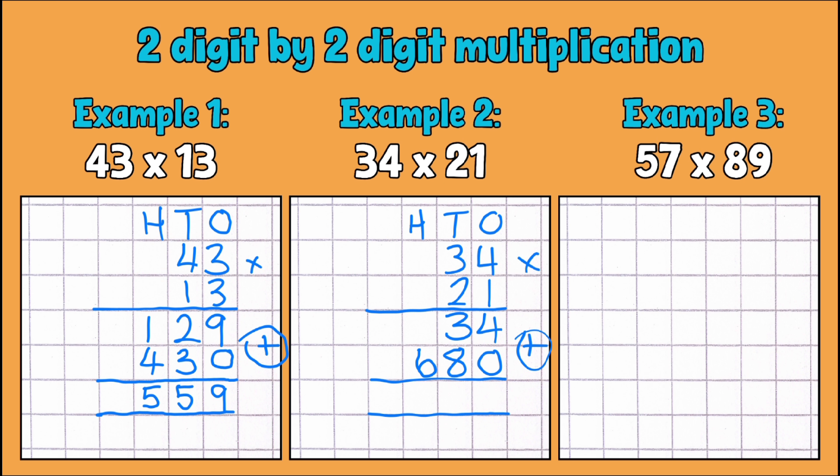And because I put my add sign there, I'm not going to forget to add them together. So I've partitioned and now I'm going to join them back up. So 4 add nothing is 4, 30 add 80, or we can make it easy for ourselves and do 3 add 8 is 11, and you can see that that's 110 there. And we've got no hundreds add 600 add the 100 makes 700, or 6 add 1 is 7. So 714 is the answer to 34 multiplied by 21.